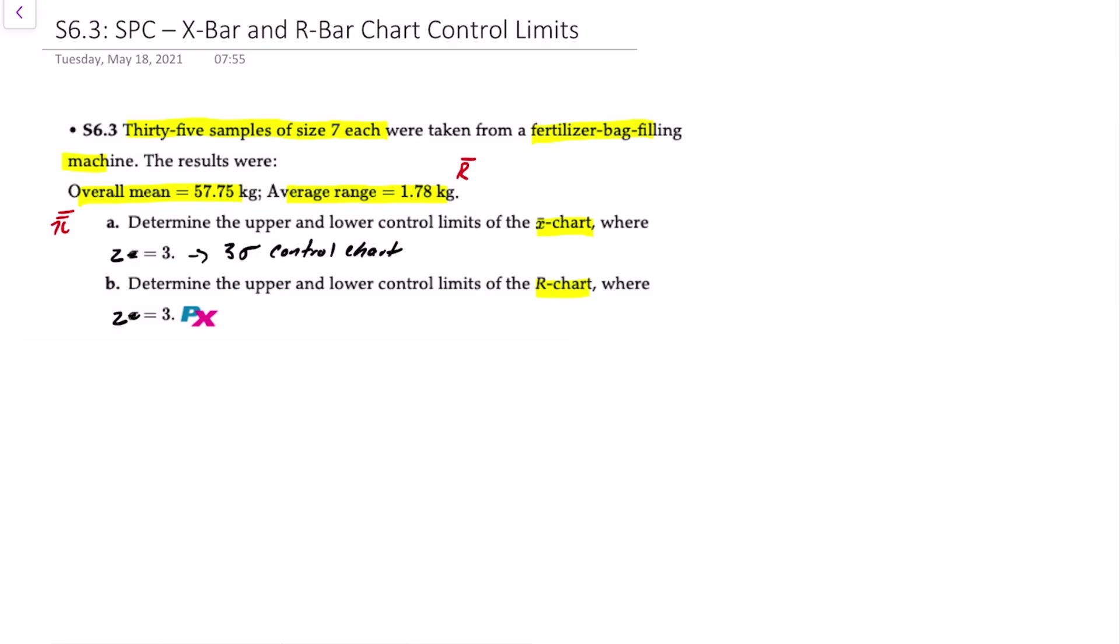Because we're not provided with the standard deviation, we have to use the alternative formula that's provided in our textbook. That formula for an X chart will be where the upper control limit and the lower control limit for an X-bar chart is equal to X-bar-bar plus or minus A2 times R-bar.